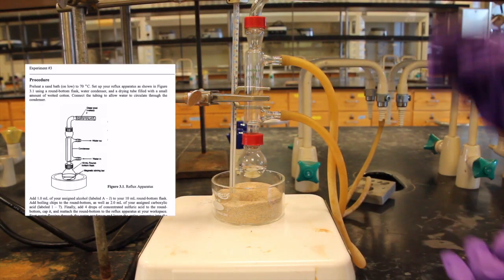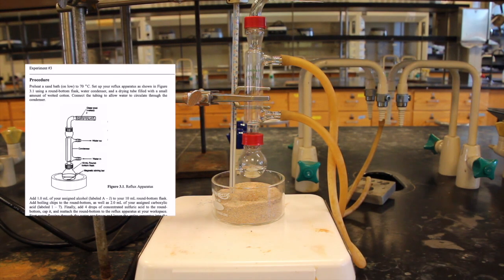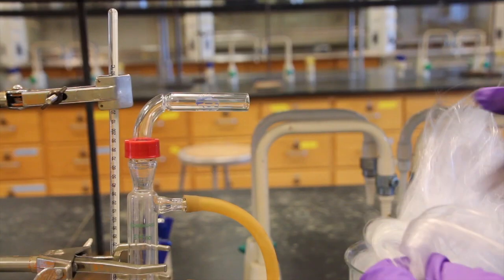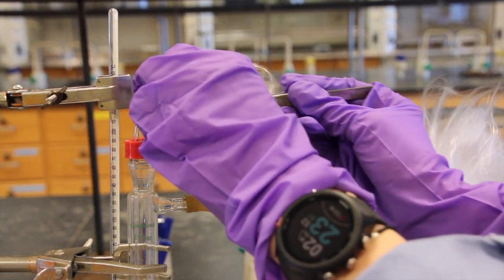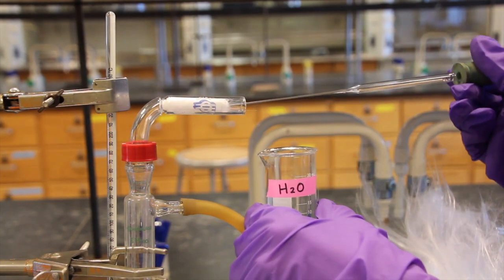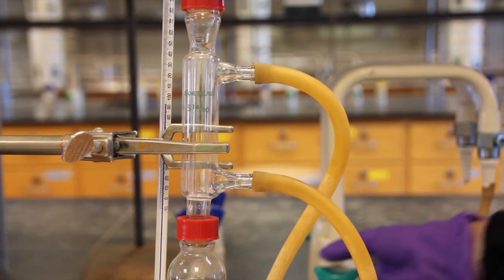To begin your synthesis, preheat a sand bath to 70 degrees Celsius. Set up your reflux apparatus as shown in your lab manual, using a round-bottom flask, water condenser, and a drying tube filled with a small amount of wetted cotton. Connect the tubing to allow water to circulate through the condenser.